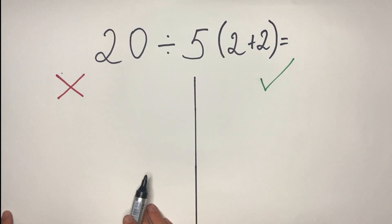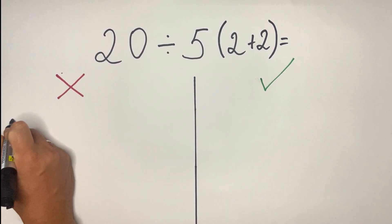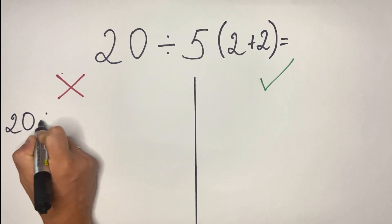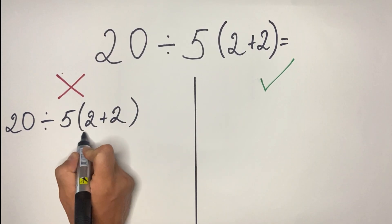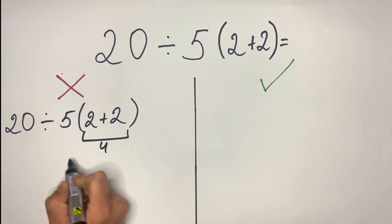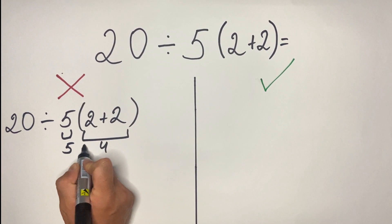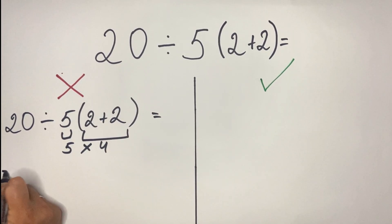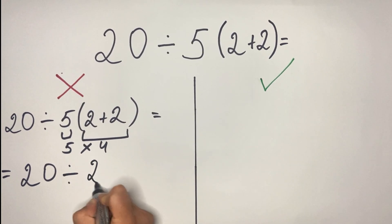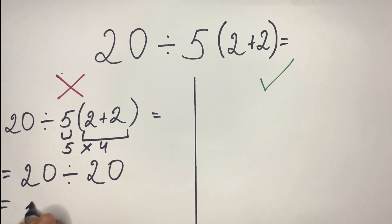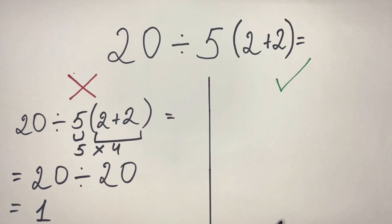Let us go through it so you can see for yourself where is the mistake in this approach. So we have 20 divided by 5 times 2 plus 2. Basically what they're doing is they make it as a 4, then they do 5 multiplied by 4 altogether. So what they get in the result, they get 20 divided by 20, and the answer is 1.